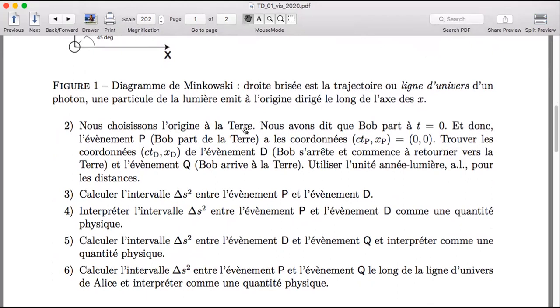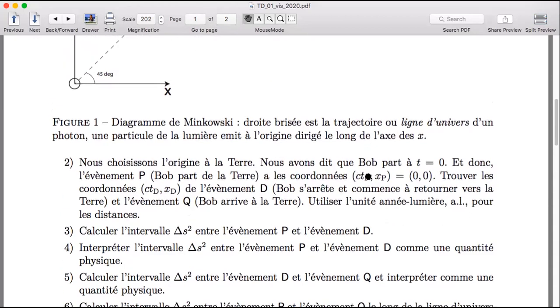Oh here I finally say that the earth is the origin and Bob leaves at t equals zero. And then I ask you to find the coordinates of the event where Bob stops. And it's going to be a straight line in between those two points.